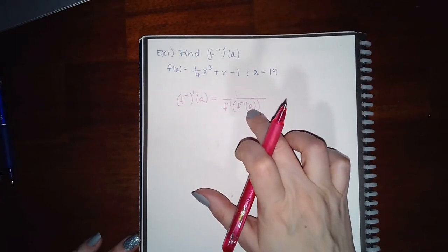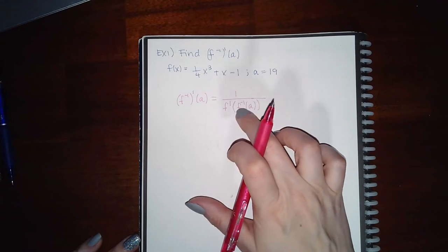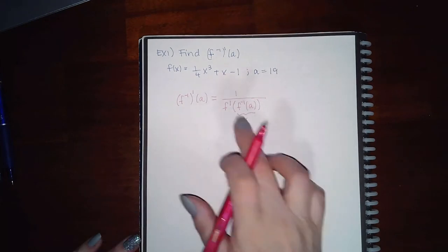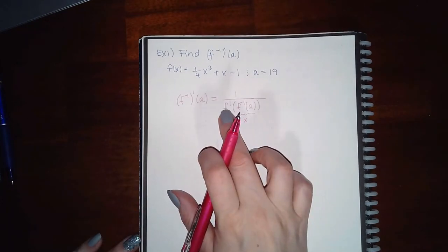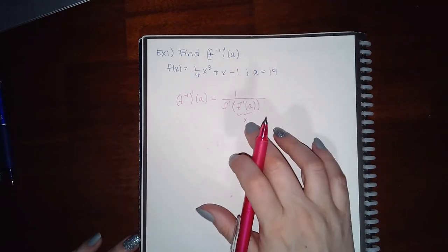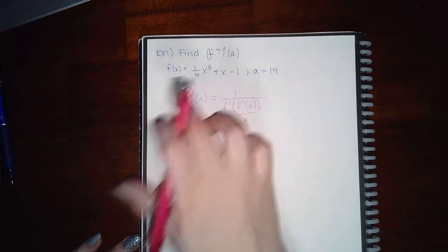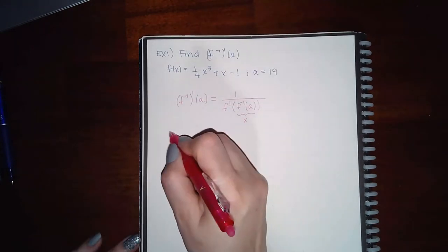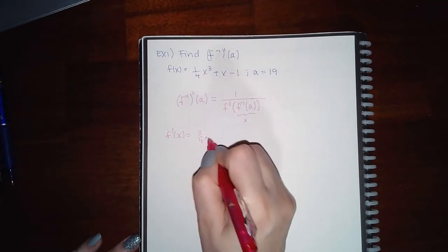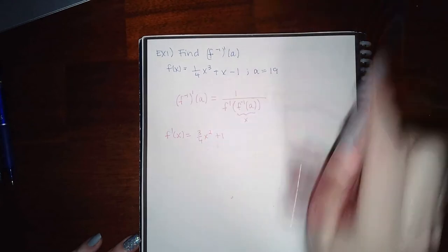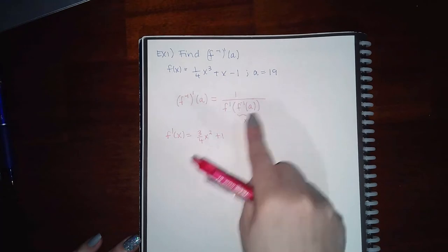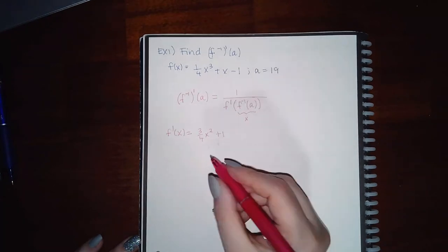We're plugging a y-value into f-inverse, and the output is an x-value that goes into f′. The derivative of f is f′(x) = (3/4)x² + 1 — the derivative of the constant term is zero. We just need to find what x-value to plug in to evaluate the denominator.